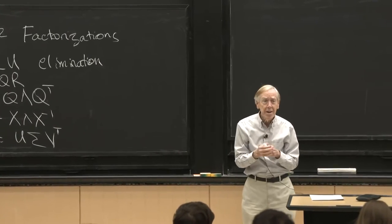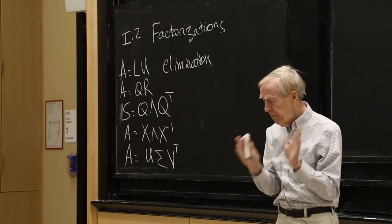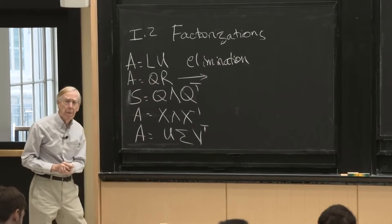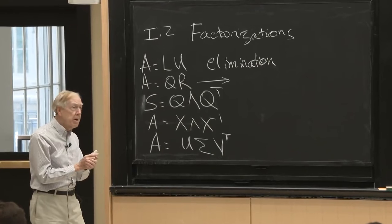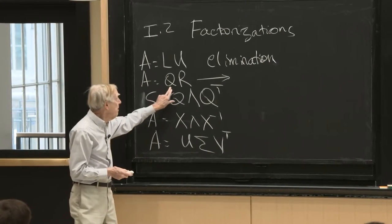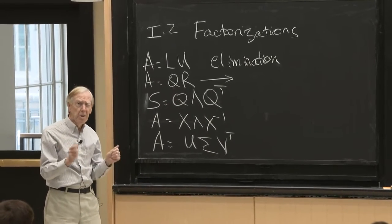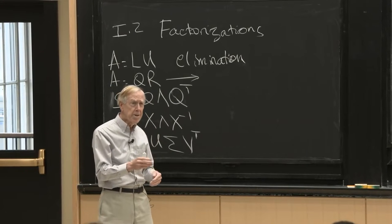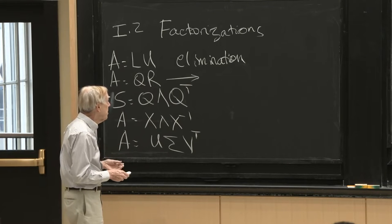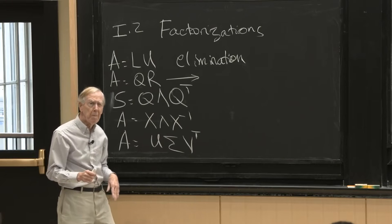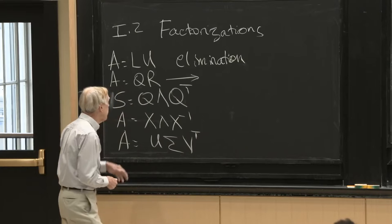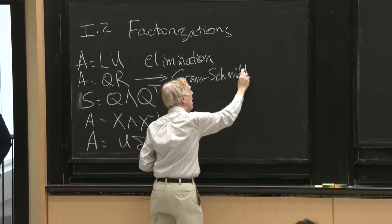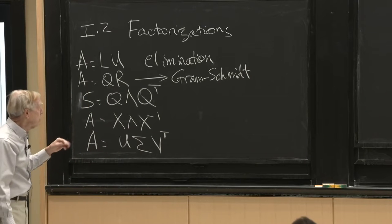The second factorization is A = QR. QR is about least squares. Q represents a matrix with orthonormal columns — orthogonal means they're perpendicular to each other, and orthonormal means they're unit vectors. The algorithm that produces Q and R is Gram-Schmidt.